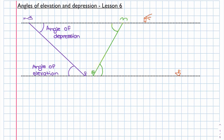Let's have a look at the last example. We have a lighthouse which could be at the top of a cliff and we have a boat in the sea. This angle here is going to be my angle of depression, and that will be equal to my angle of elevation. The angle of depression is from the lighthouse to the ship, and the angle of elevation is from the ship to the lighthouse.